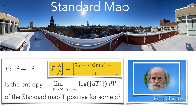The standard map is a simple area-preserving map on the two-dimensional torus. We measure sensitive dependence on the initial conditions for the parameter c bigger than 2, but we cannot prove it. In the next slide we will see an example for c equal to 2.4.